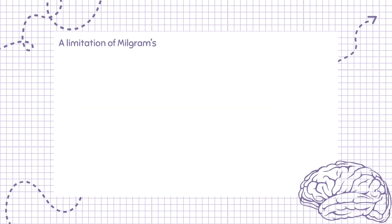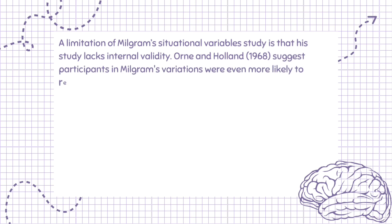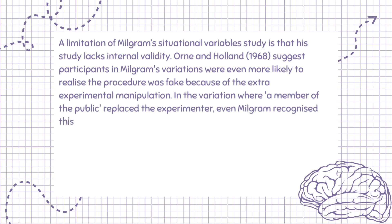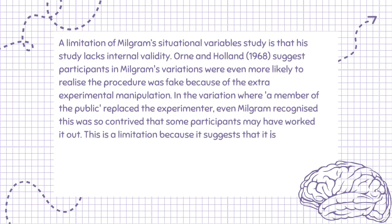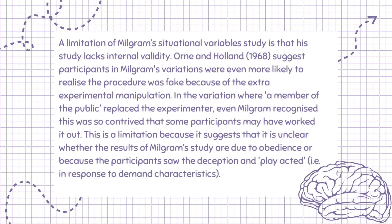A limitation of Milgram's situational variable study is that it lacks internal validity. Orne and Holland (1968) suggest participants in Milgram's variations were even more likely to realise the procedure was fake because of the extra experimental manipulation. In the variation where a member of the public replaced the experimenter, even Milgram recognised this was so contrived that some participants may have worked it out. This is a limitation because it is unclear whether the results are due to obedience or because participants saw through the deception and play-acted, i.e. in response to demand characteristics.